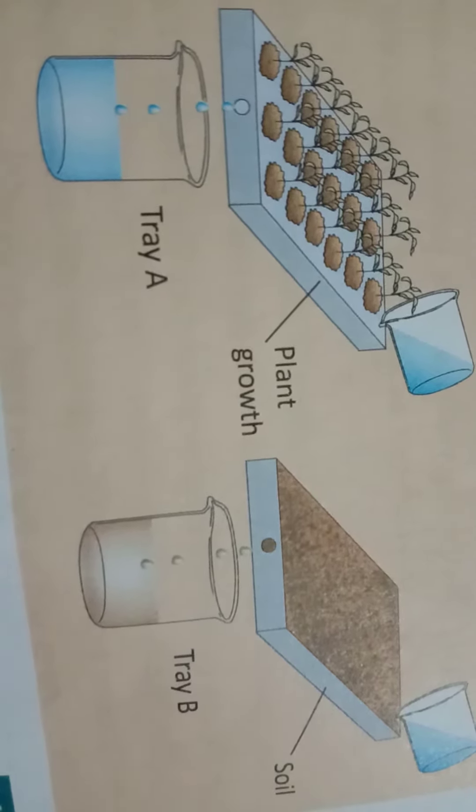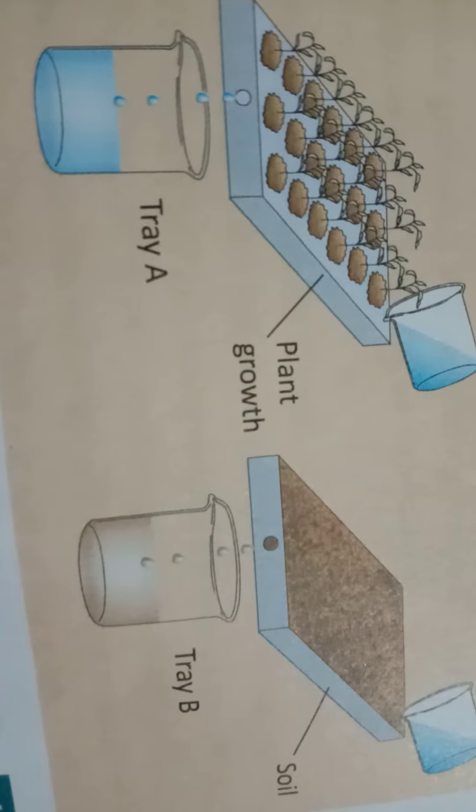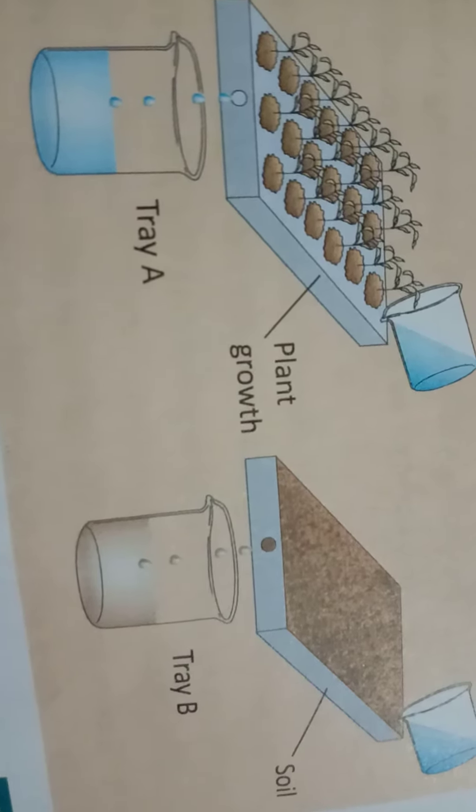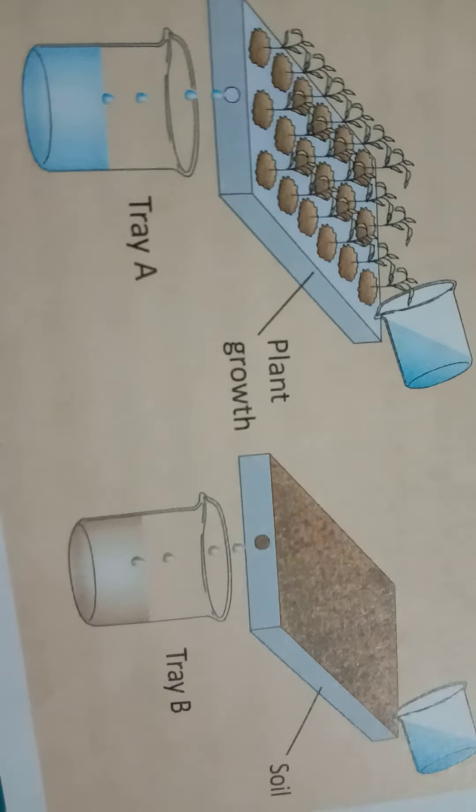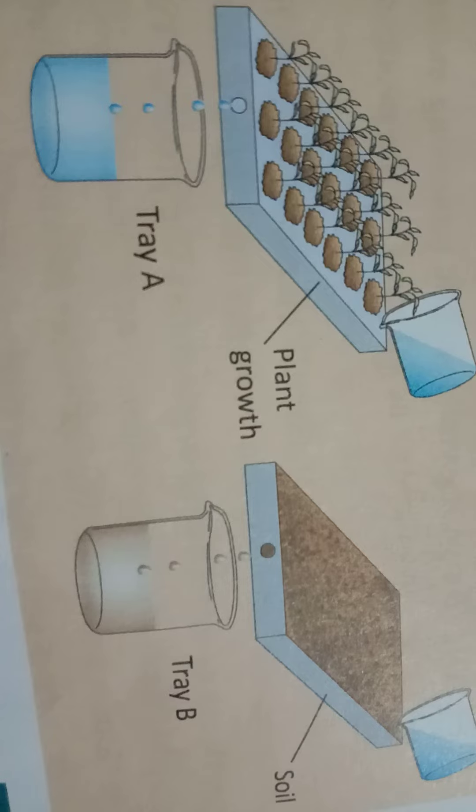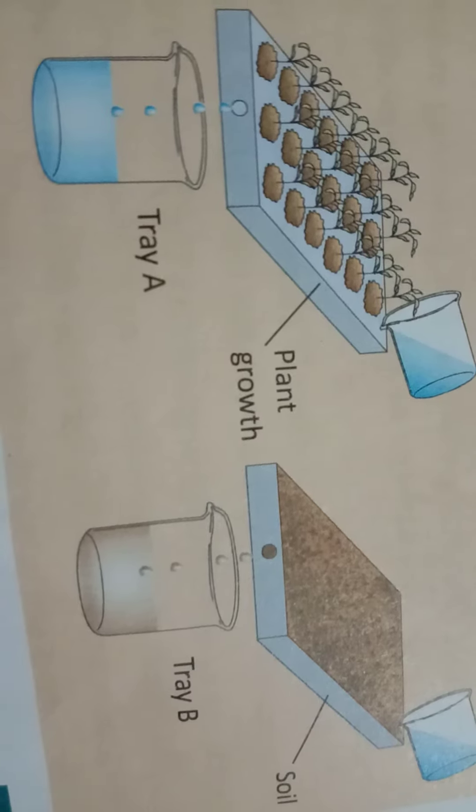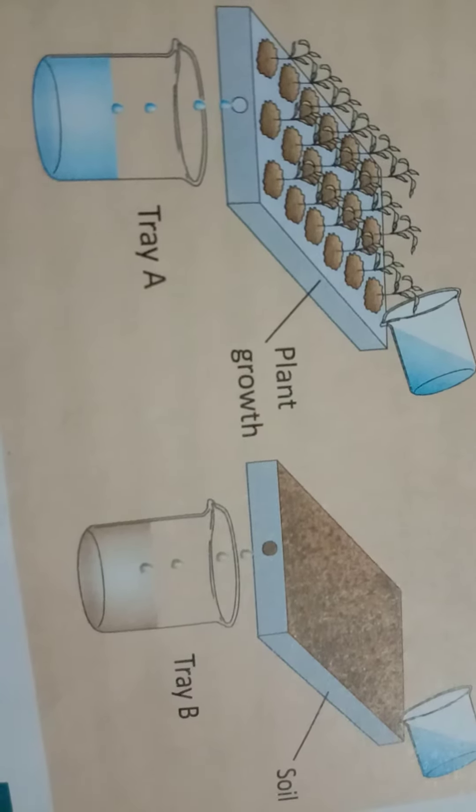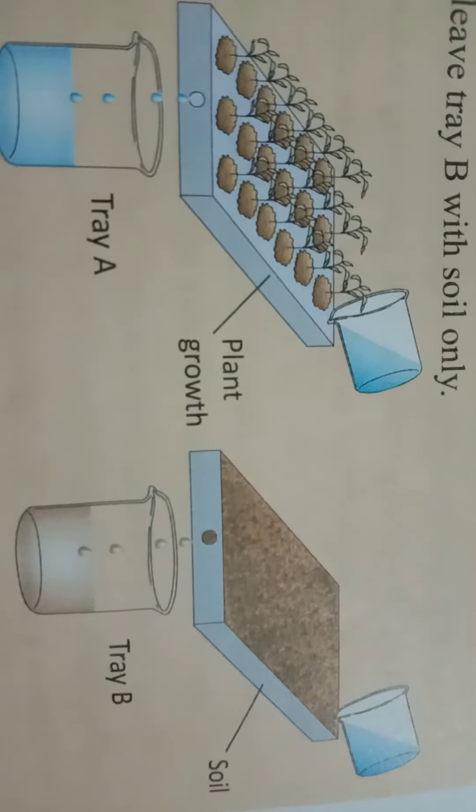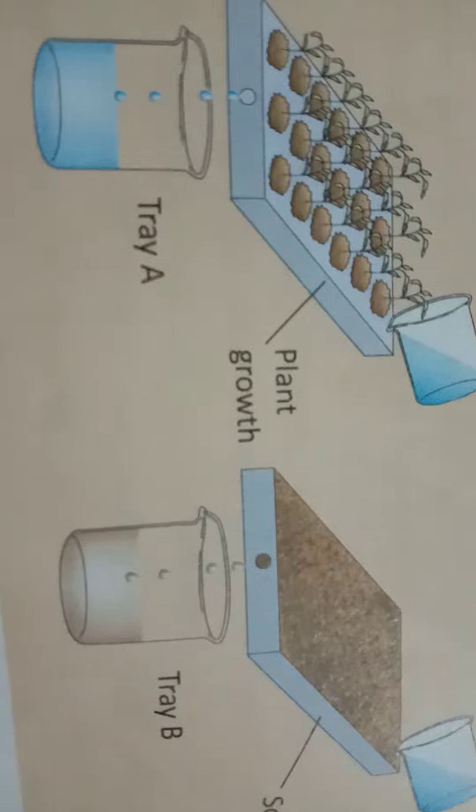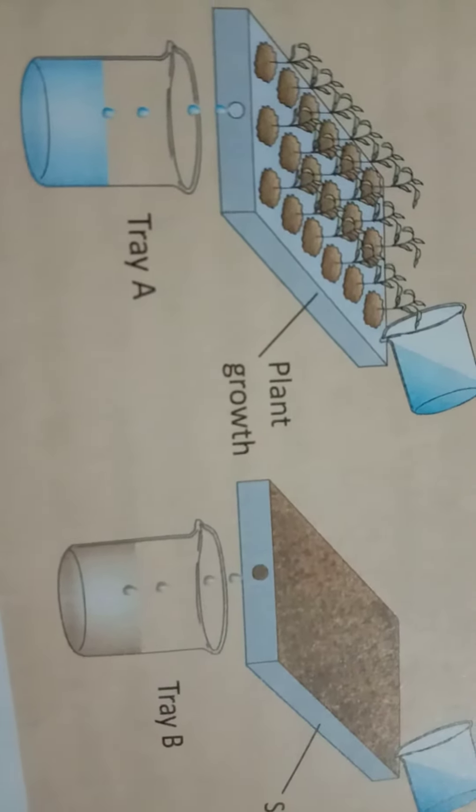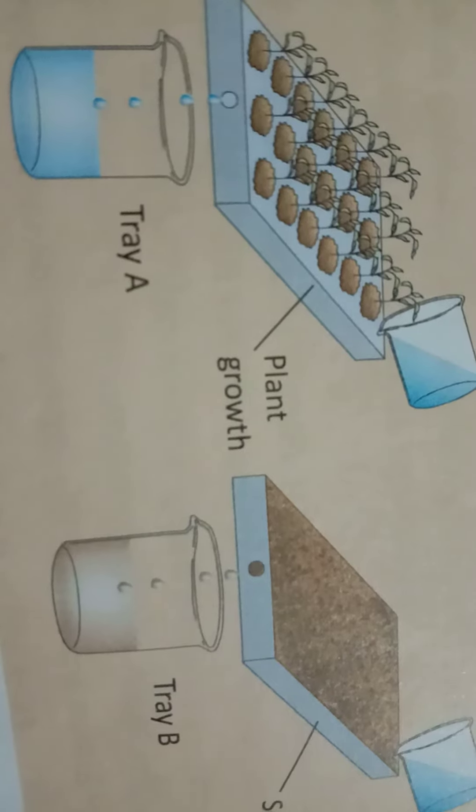In the first tray, you can see soil is not eroded. It means soil particles do not fall in the beaker. But in the second tray B, you can see some soil particles fall in the beaker.